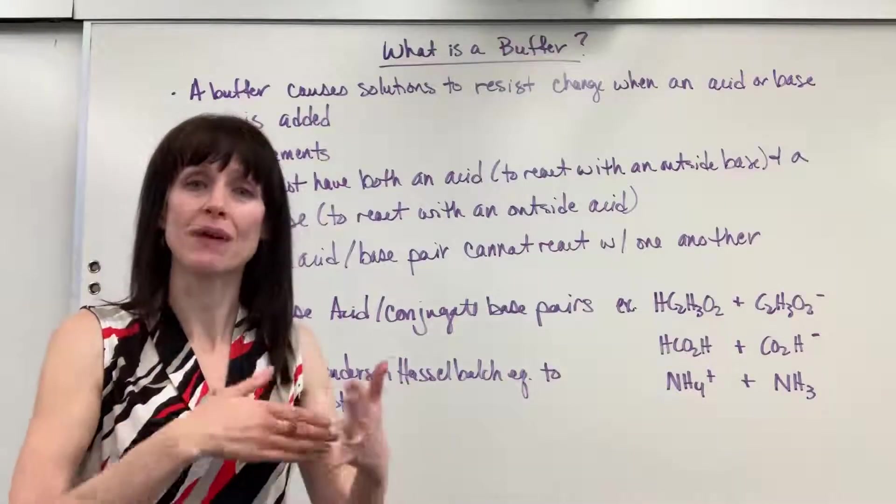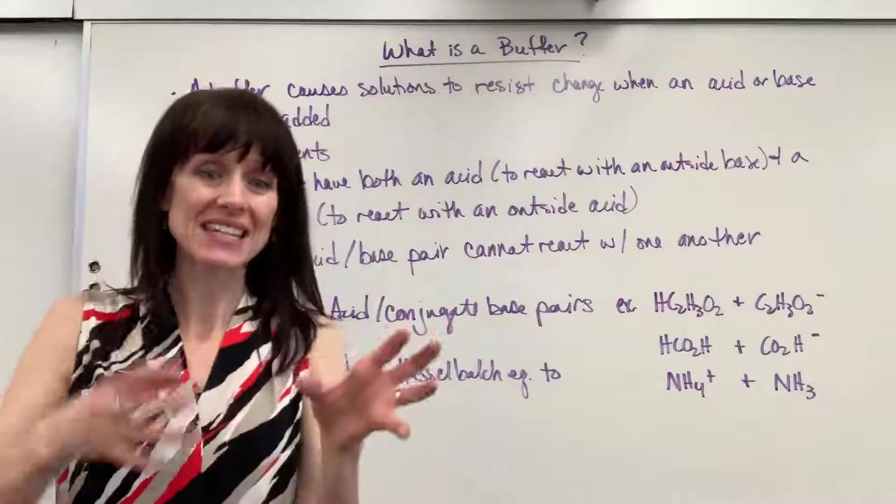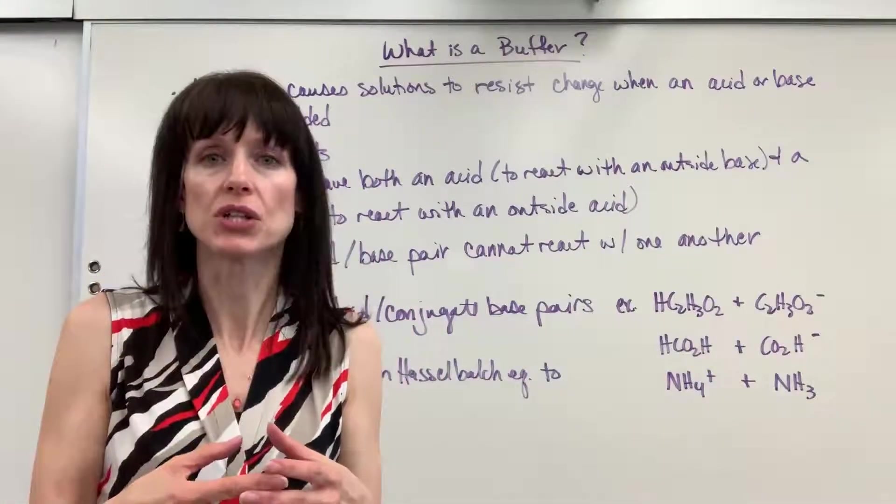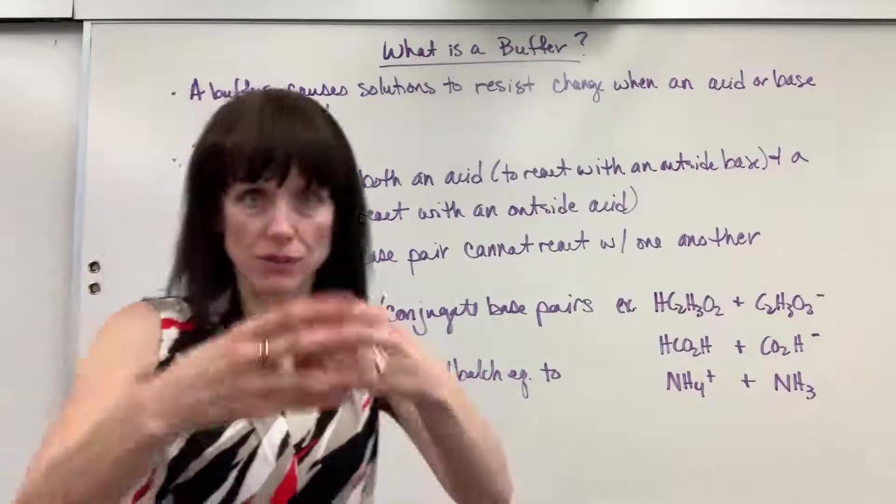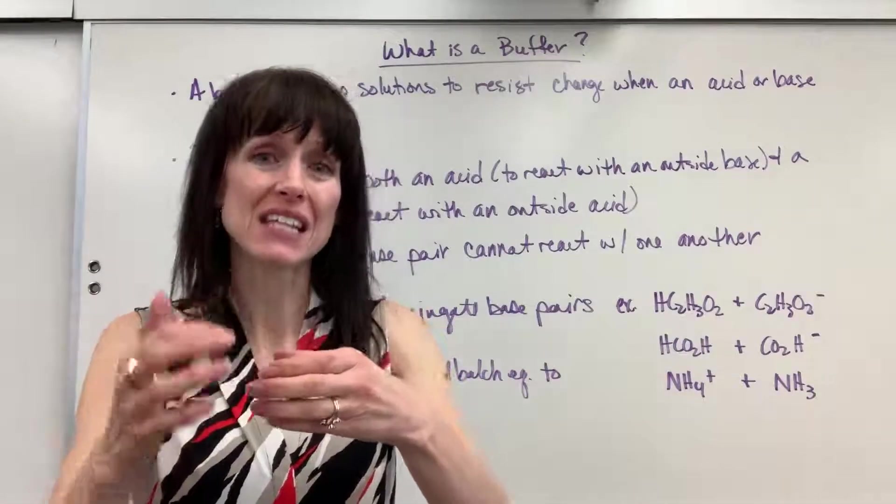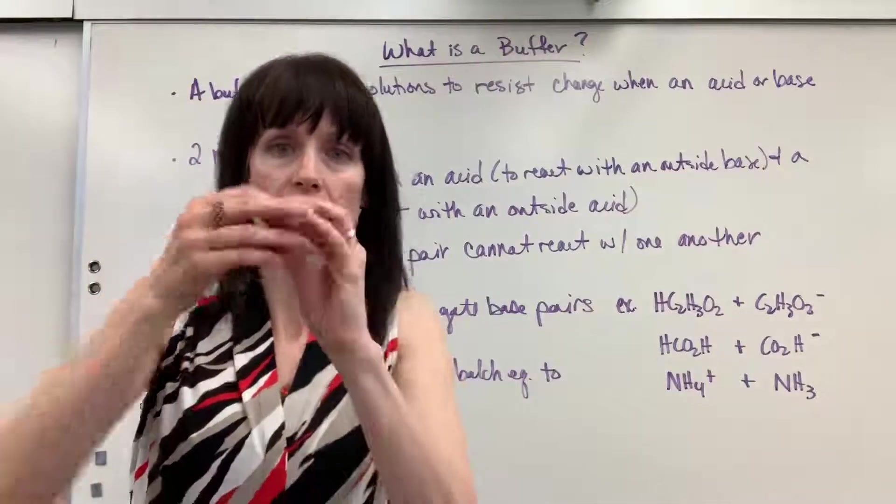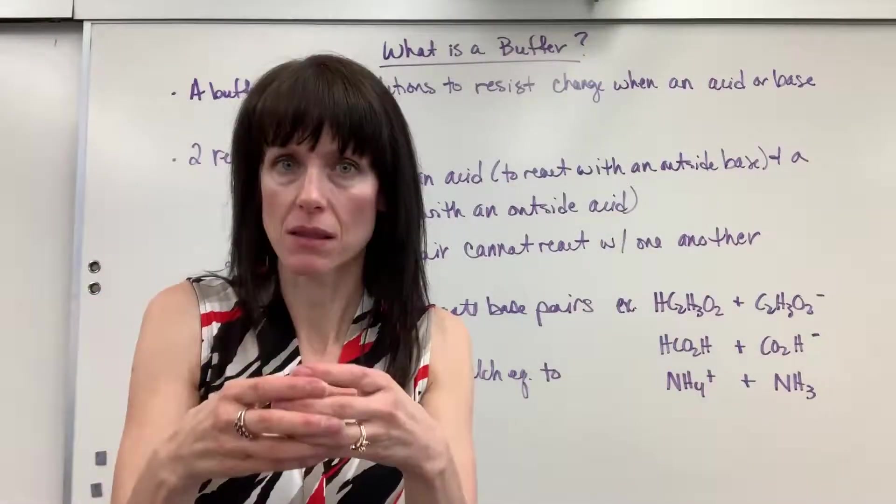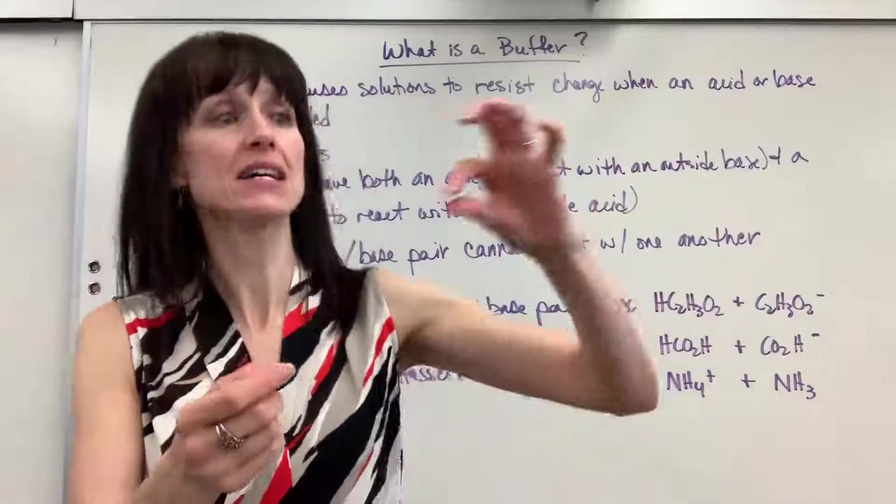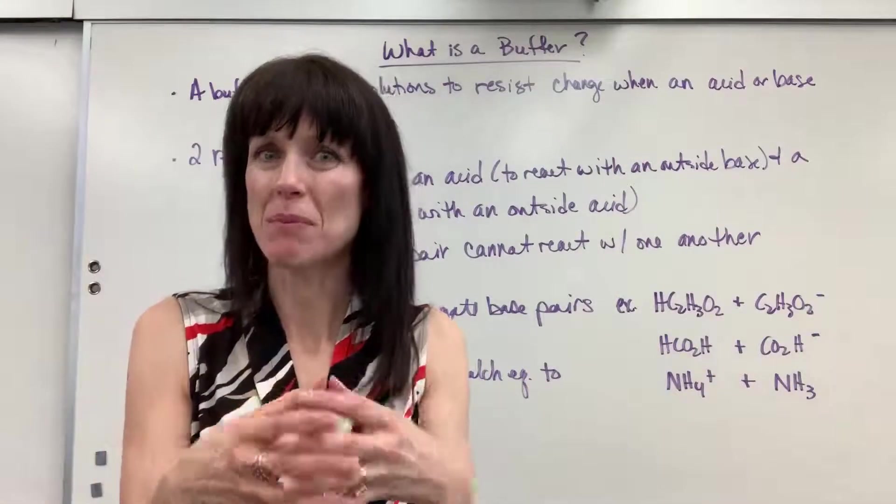There are two requirements to make a buffer. Number one, you have to have both an acid and a base inside that solution. Why? Okay, so here's my solution, I have a buffer inside of it which means there's an acid and a base inside of it. So if I add a base, the acid will consume it so it maintains the pH. If I add an acid to the solution, the base will consume it so it can maintain that pH.